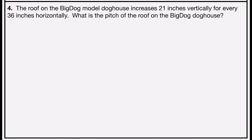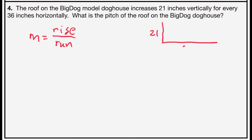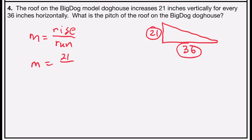Problem number four says, the roof on the big dog model doghouse increases 21 inches vertically for every 36 inches horizontally. What is the pitch of the roof? Similar to problem one, I'll compare rise over run. The vertical change is 21 and the horizontal change is 36. Reducing the fraction by 3 over 3: 21 divided by 3 is 7, and 36 divided by 3 is 12. So the pitch of the roof is 7 over 12.